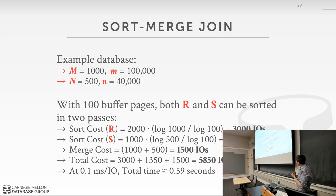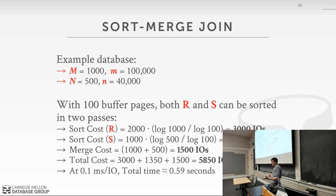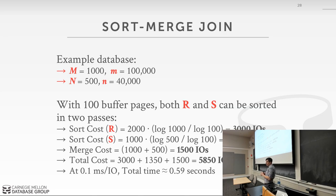Using our example database with 100 buffer pages for sorting, we can sort R and S in just two passes each. The cost of sorting R is 3,000 I/Os, sorting S is 1,350, and the merge cost is 1,500, for a total of 5,800 I/Os. That comes out to roughly 59 seconds on an SSD — a bit better. We were around 50 seconds with block nested loop join, so we're getting into sub-second-range numbers.